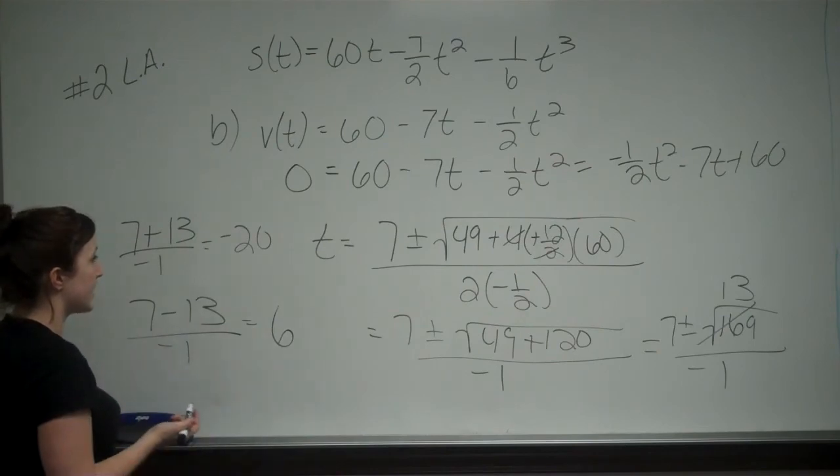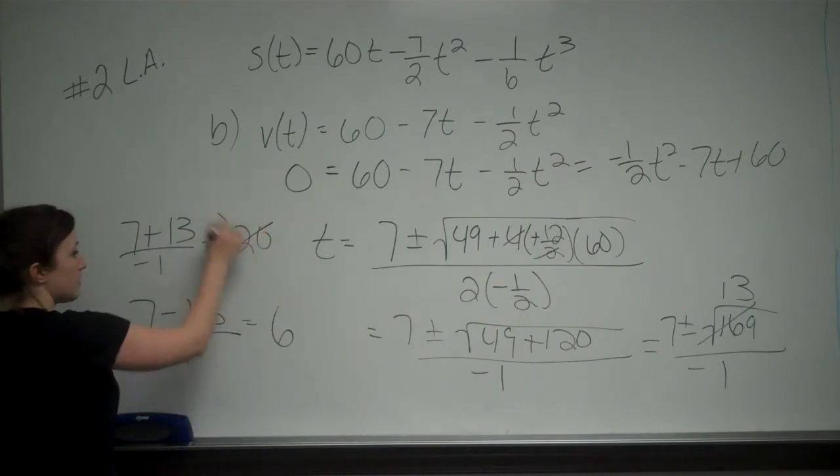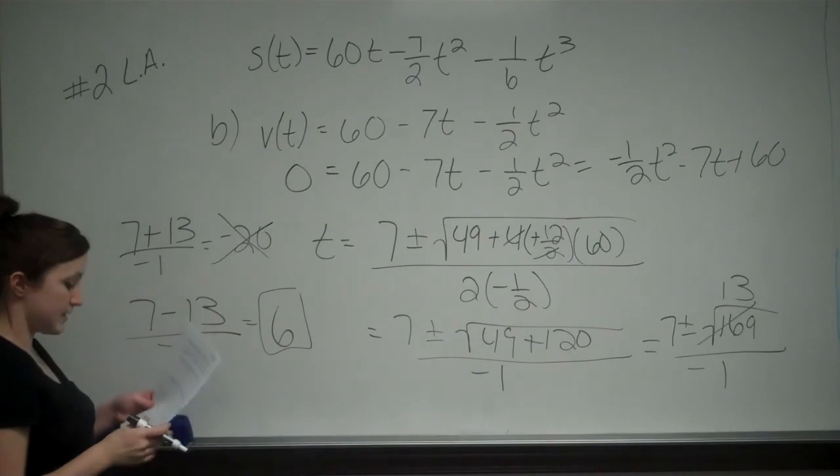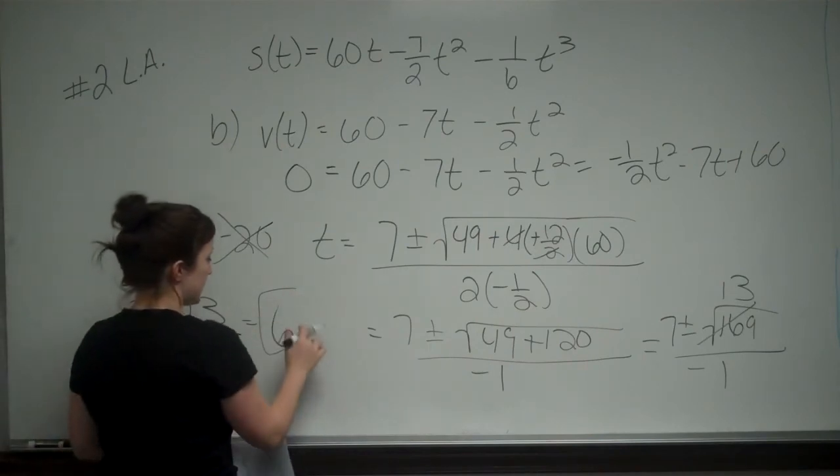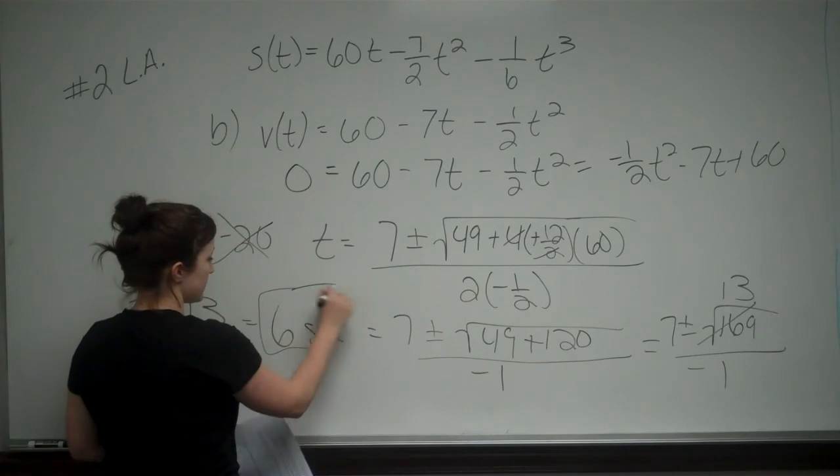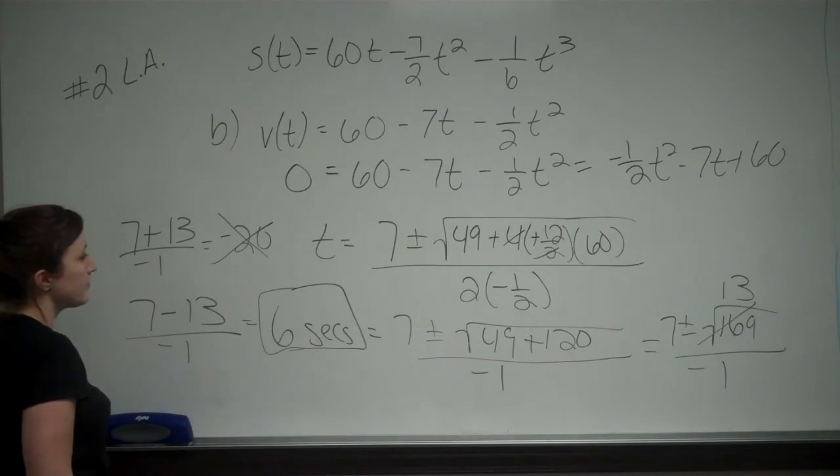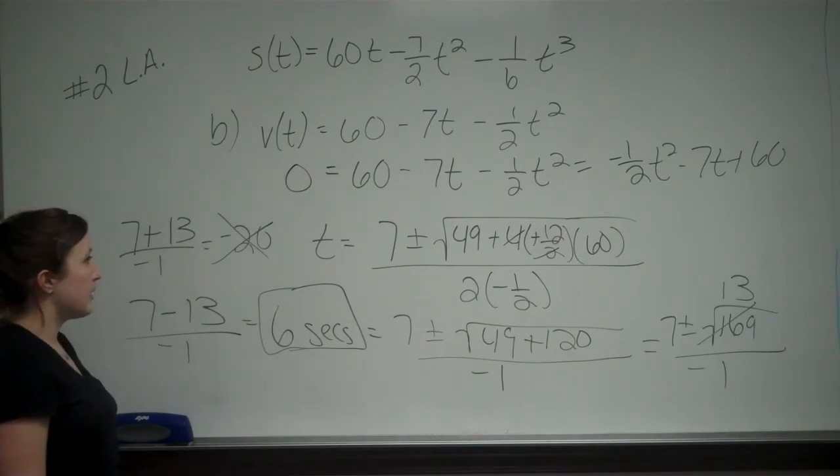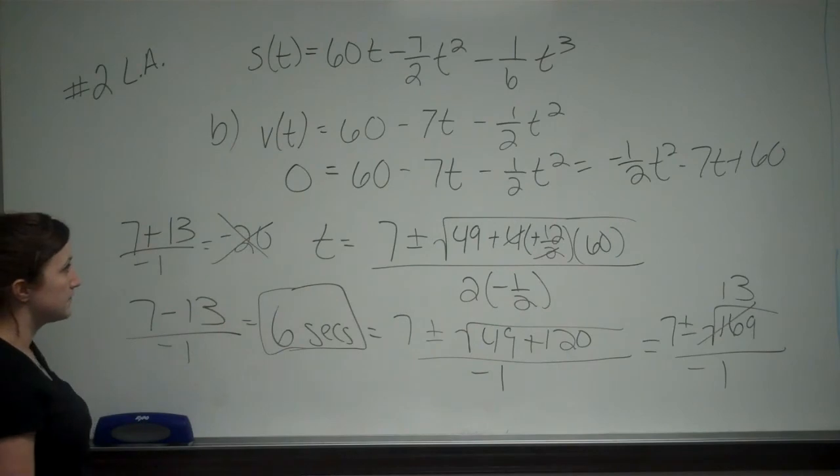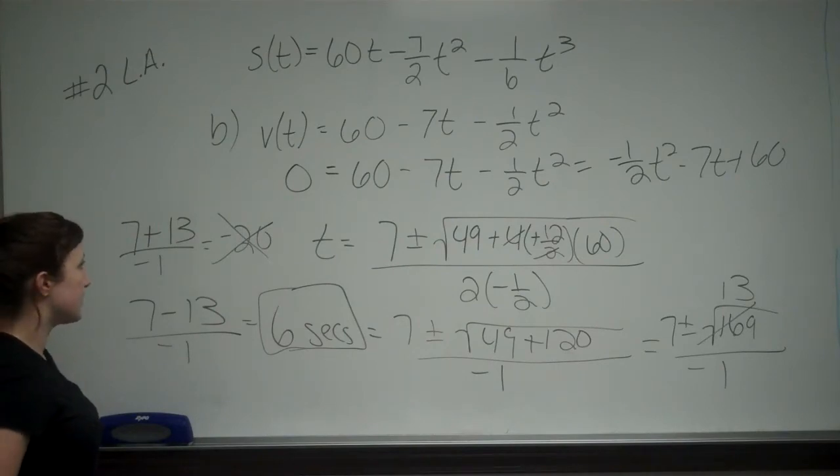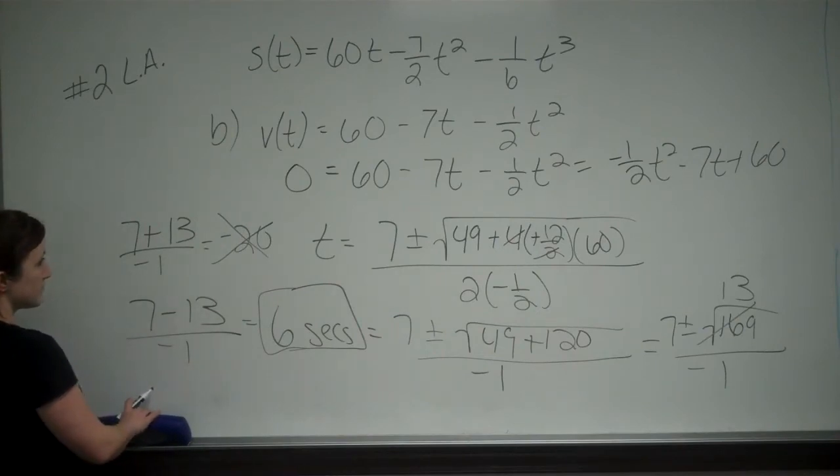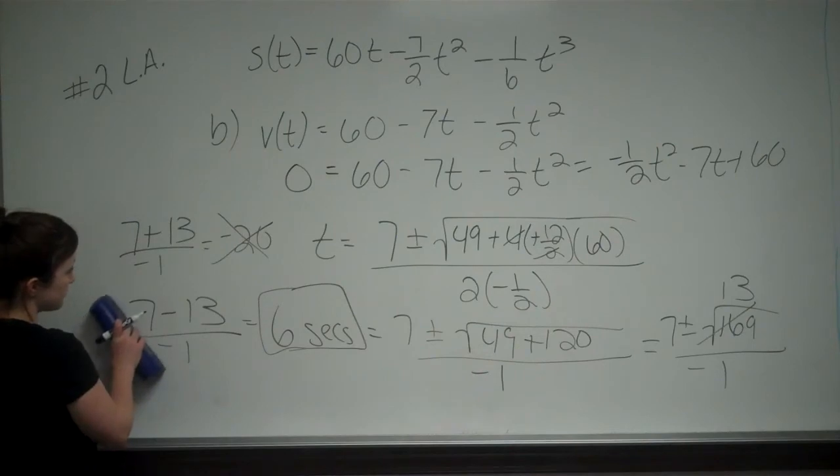And again, remember that T is in seconds, so we can't have a negative time. So the only answer that we can have is 6. And again, there are probably a couple ways that you could have done this. You could have factored and found that T is equal to 6. So lots of different ways.